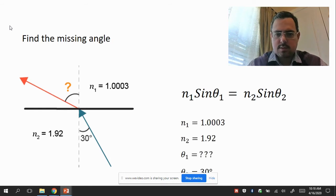You have the equation on the right and let's see what numbers we can plug in. It tells us N1 is 1.003, so we'll put that into our equation. N2 is 1.92, we'll put that into the equation. We don't know what the first angle is, but we know the second angle is 30 degrees. First we're going to find the first angle.